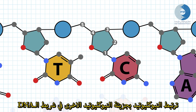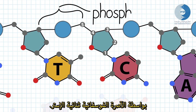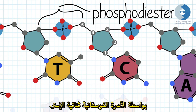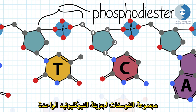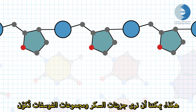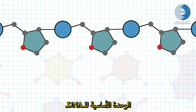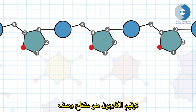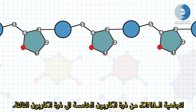Nucleotides attach to each other in the DNA strand by phosphodiester bonds. The phosphate group of one nucleotide binds to the three prime oxygen of the neighboring nucleotide. Thus, we can see that the sugars and phosphate groups make up the DNA backbone. The carbon numbering is key to describing the directionality of the DNA strand, five prime to three prime.